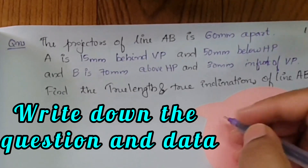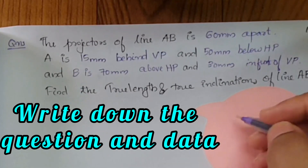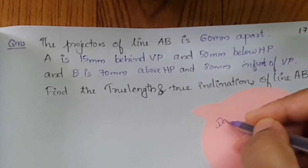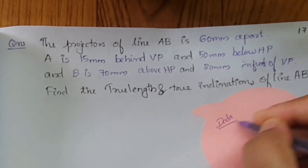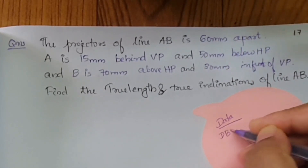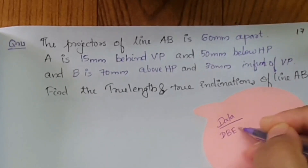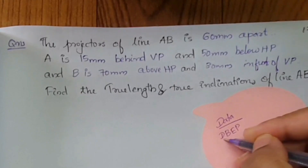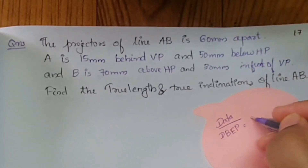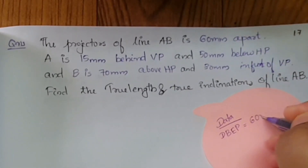Projectors of line AB are 60 mm apart — that is, the distance between end projectors is 60 mm.